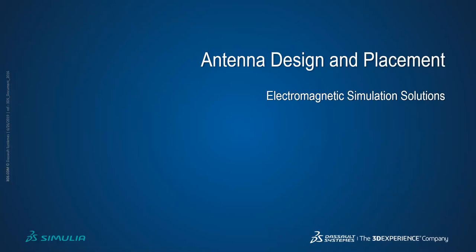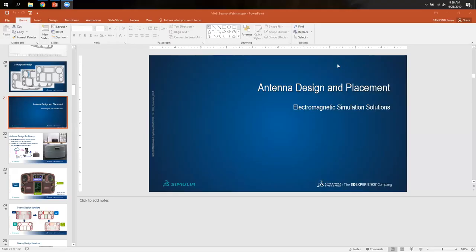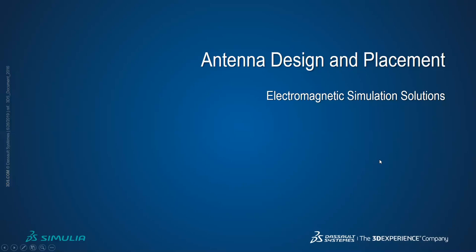Thank you for that presentation. We can see Eno's screen. Good day everyone. During this part of the presentation we're going to be talking about antenna design and placement. When we think of a wireless device such as the BME, the most important aspect of design is the wireless connectivity, because without it the device would be useless. The BME device needs to connect via WiFi to your home network and to the cloud, or via Bluetooth to a mobile device which connects via cellular or WiFi to the cloud.